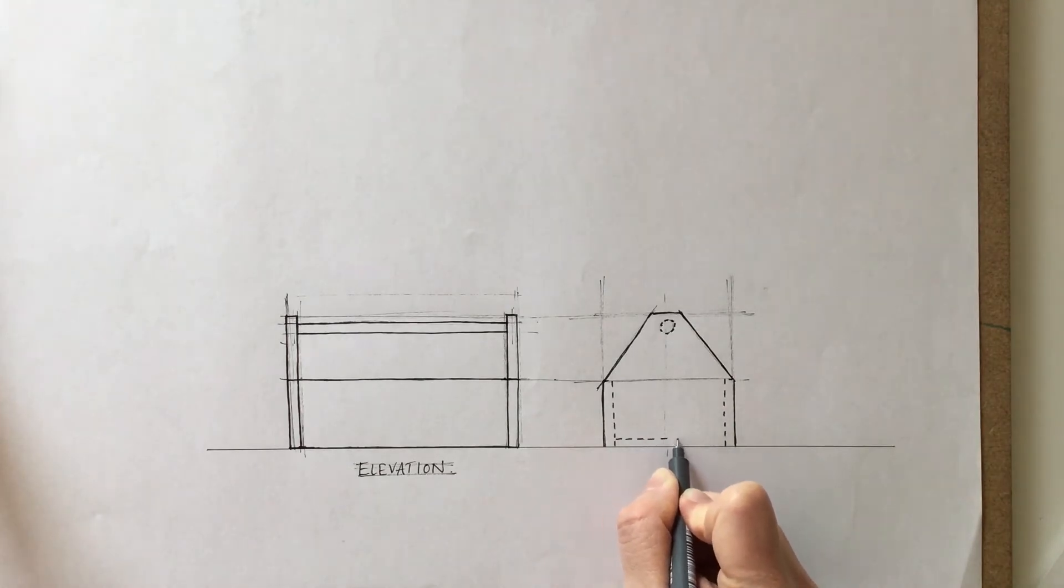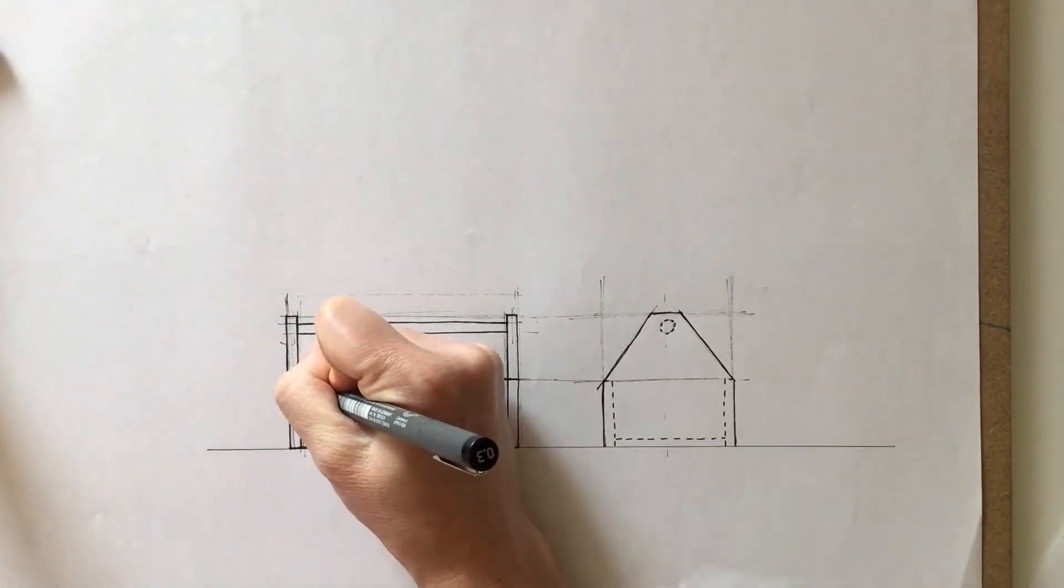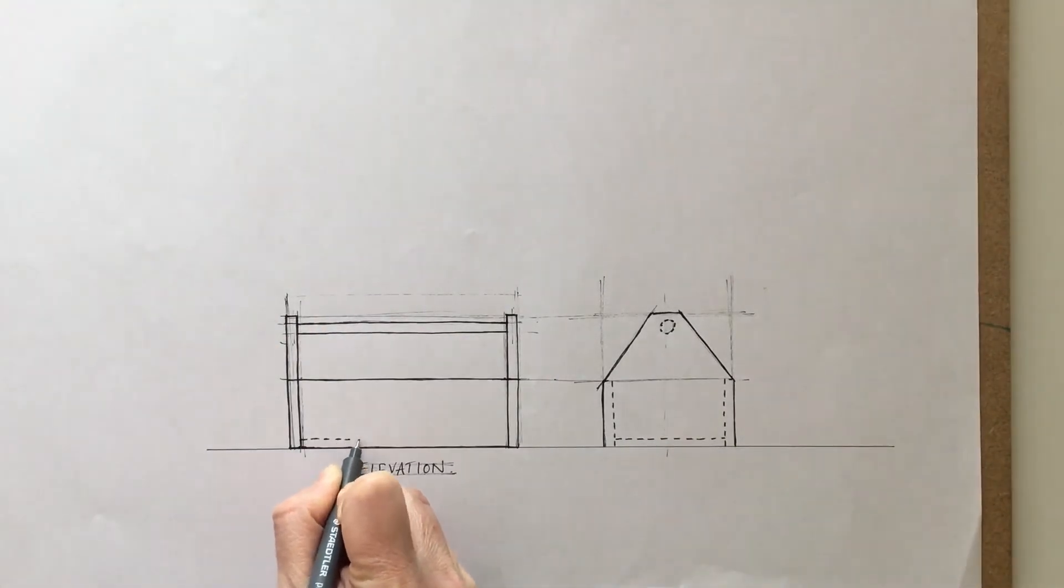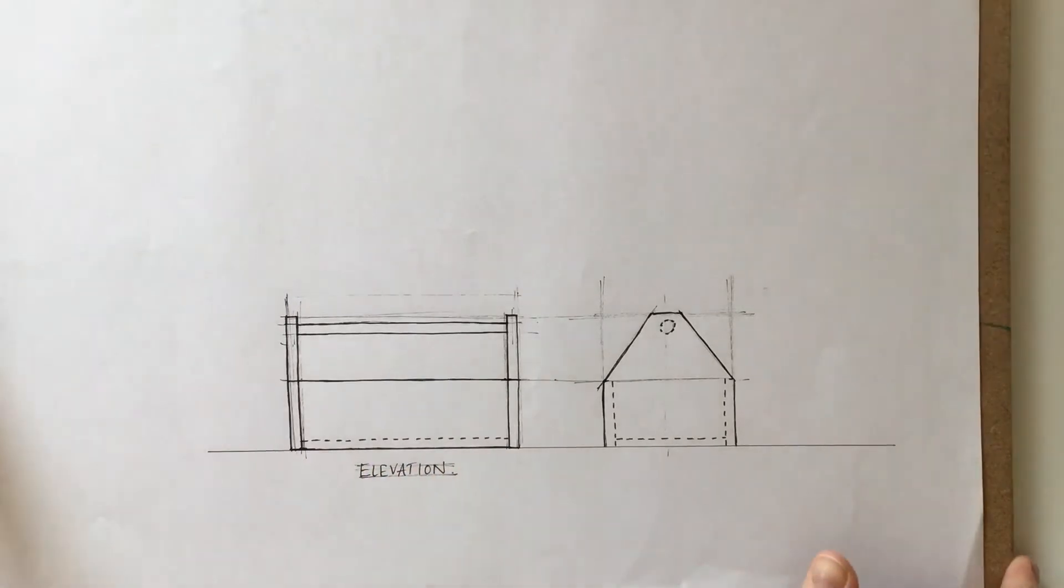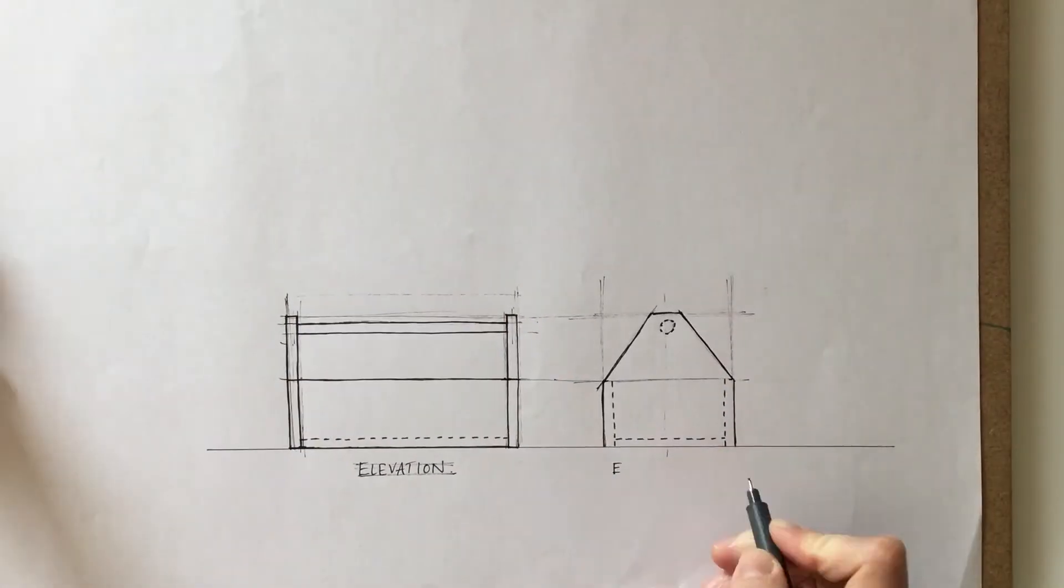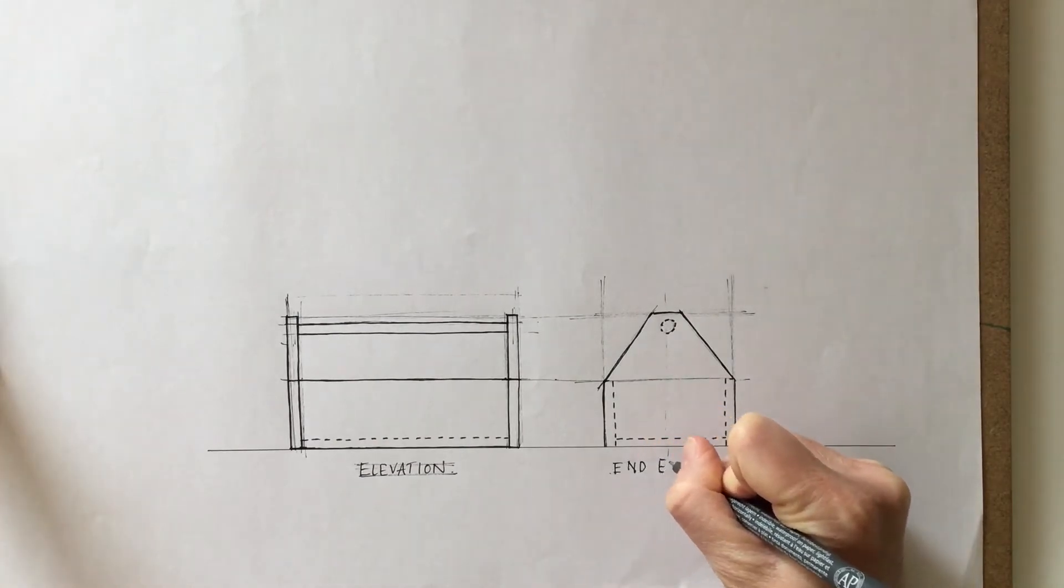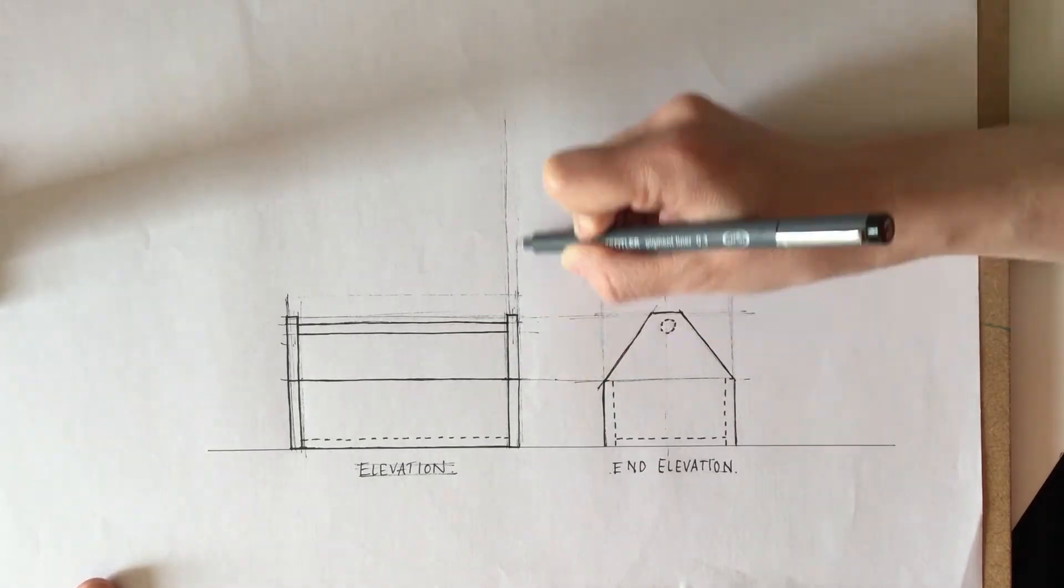We're also going to be including some hidden detail, and these lines that I've just drawn in, this line here is indicating the base of the box which is a dashed line, and you can see in the side view, this end elevation, the dashed lines showing the two sides.